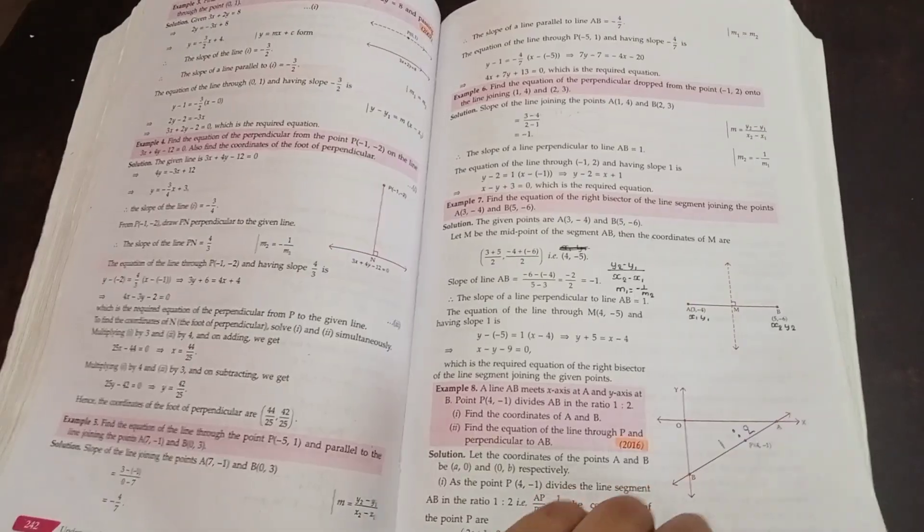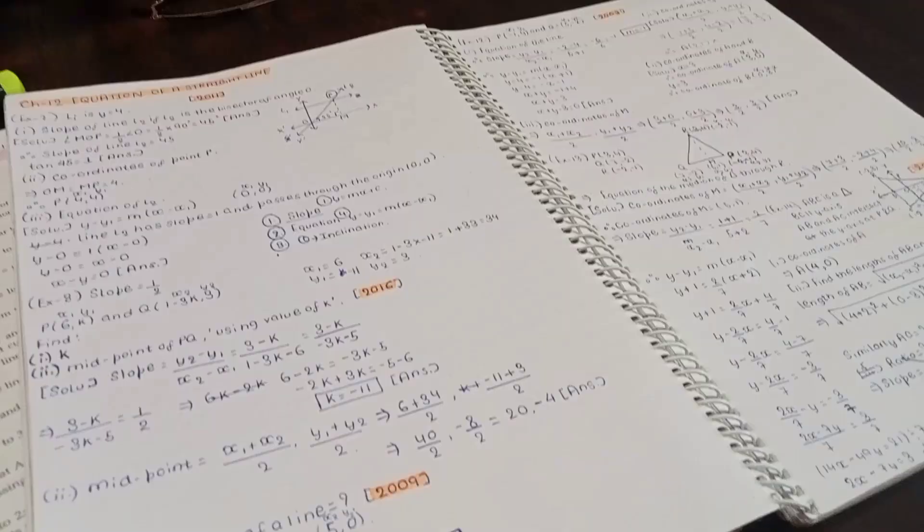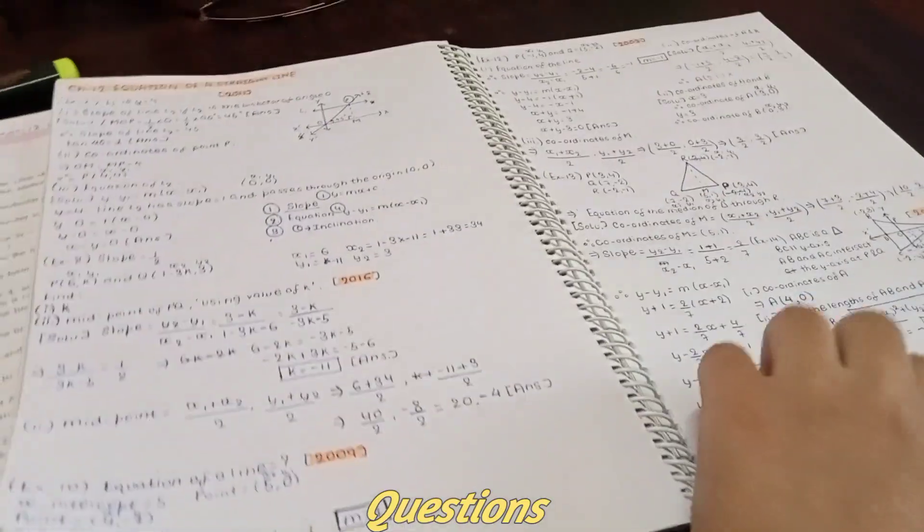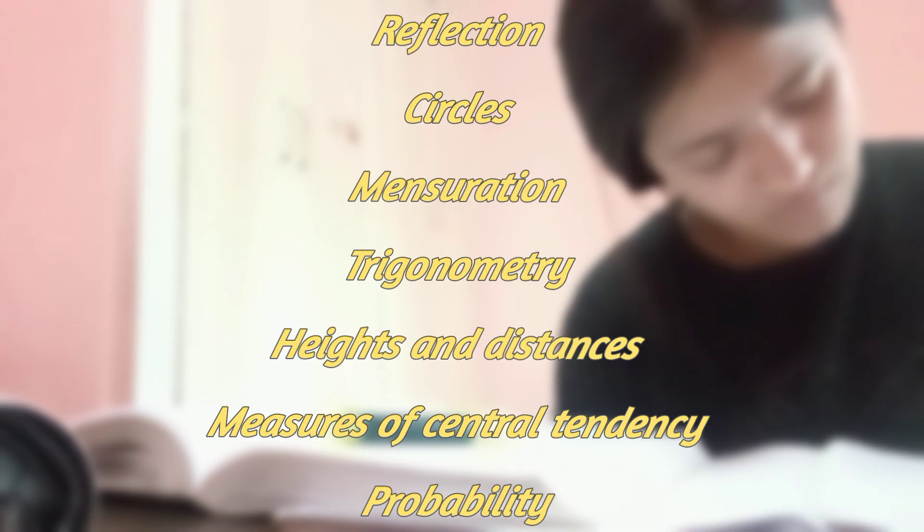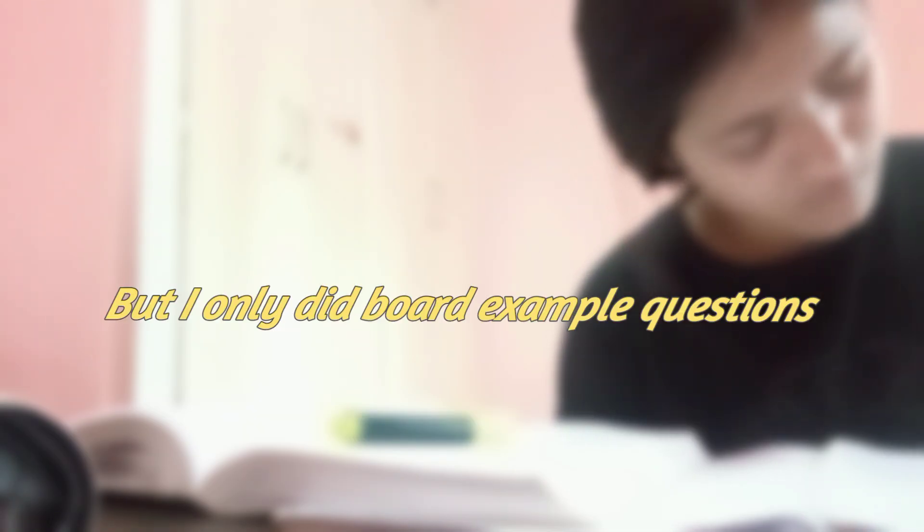I completed all the chapters till 4pm. But let me tell you guys that I did not do statistics, circles as well as height and distances. The reason being that I did those chapters a couple of times. So I just went through it, like revised it. And this was the manner in which I did all the chapters. But the thing is that I did only the board questions from the examples.